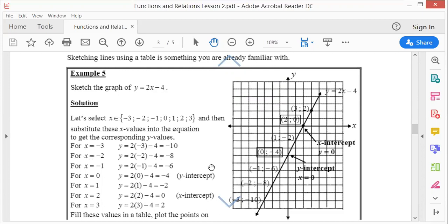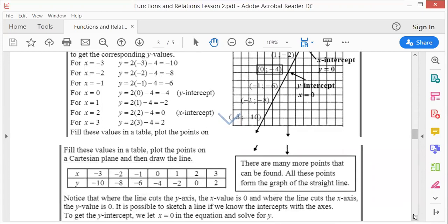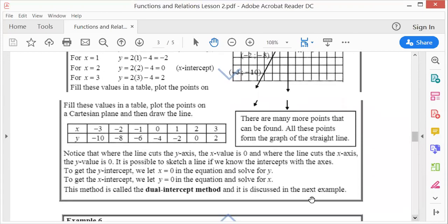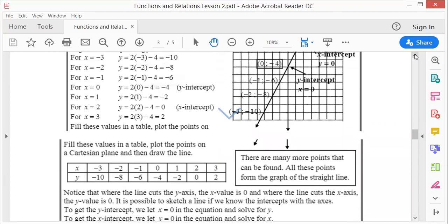But that's a bit long, so there is a shorter way of doing it. Instead of using the thing you usually call dual intercept. Now by that I mean that you only work out the x-intercept and the y-intercept. Now that is quite easy.